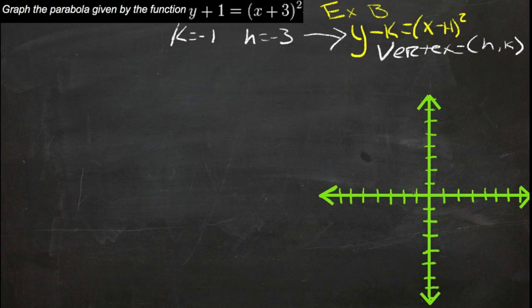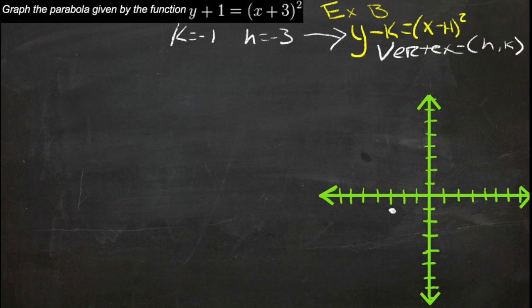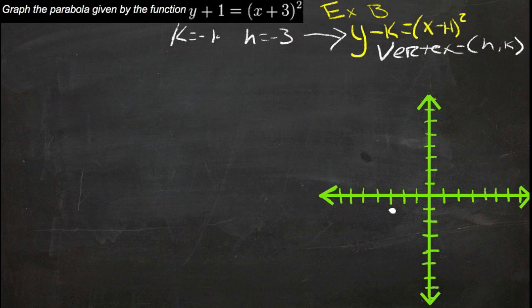Which means the vertex here is negative 3, negative 1, or right there. So now we already know where the turnaround point of the vertex is, we just need to find some intercepts.